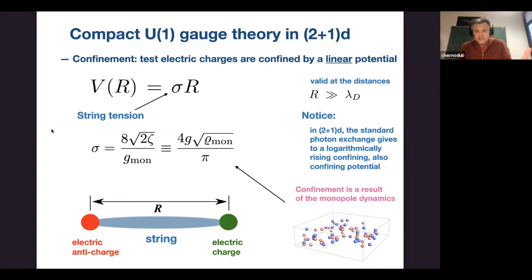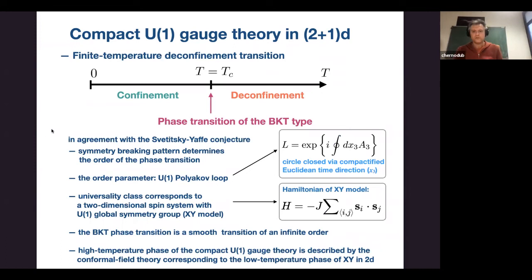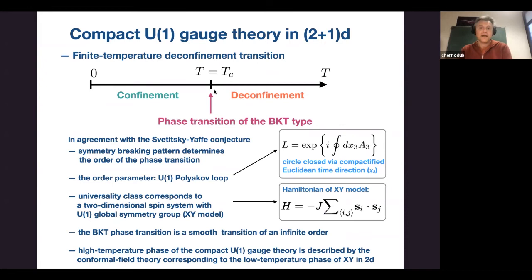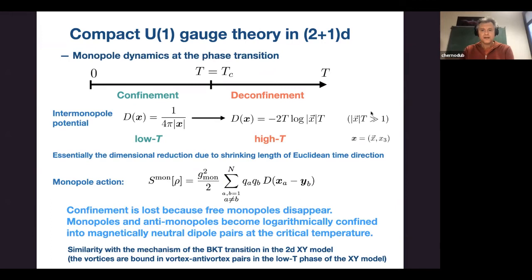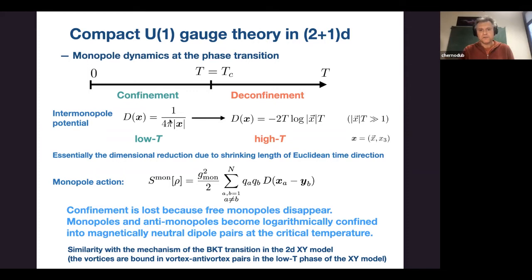The order parameter is the Polyakov loop — zero in the confining phase and non-zero in the deconfining phase. The dynamics is due to monopoles. At low temperatures, monopoles form a Coulomb gas and interact via one-over-r interactions like ordinary Coulomb interaction. When temperature increases, the interaction becomes logarithmically confining and proportional to temperature — then monopoles and anti-monopoles get attracted and can form monopole–anti-monopole pairs.